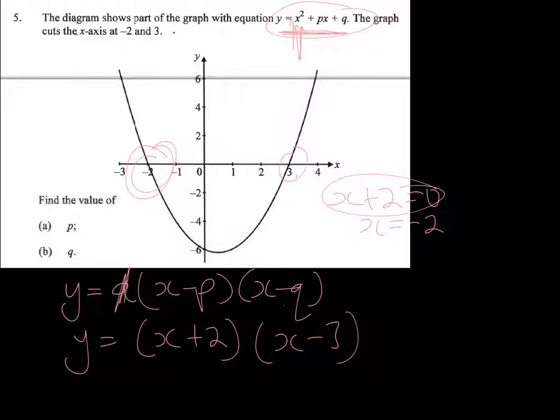So all you have to do here then is expand that, and you end up with x squared minus 3x plus 2x minus 6, which we can therefore simplify to x squared minus x minus 6.